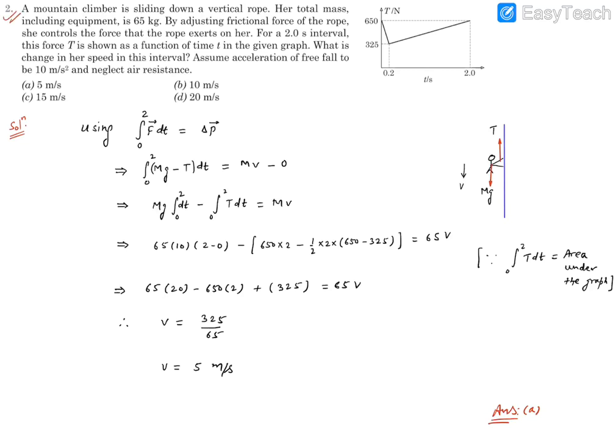Question number 2. It reads, a mountain climber is sliding down a vertical rope. Her total mass with equipment is 65 kg.